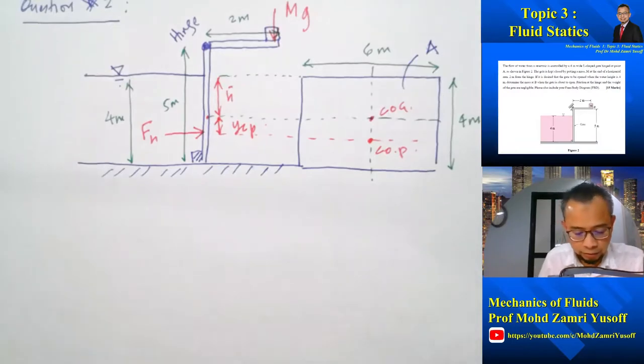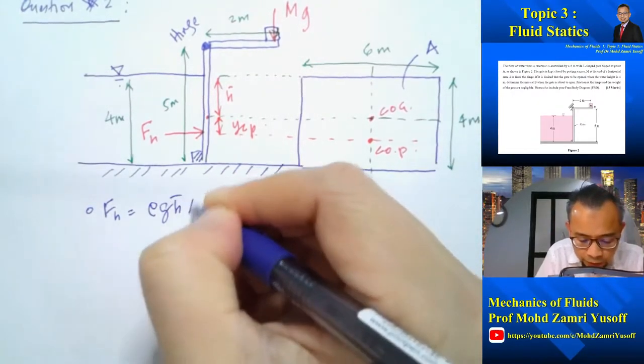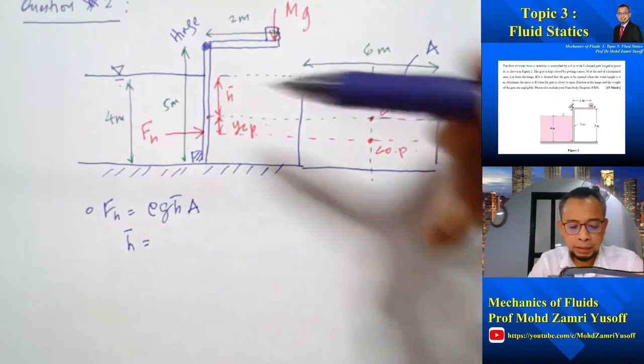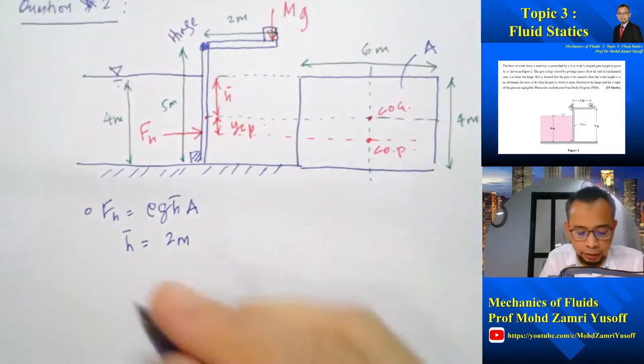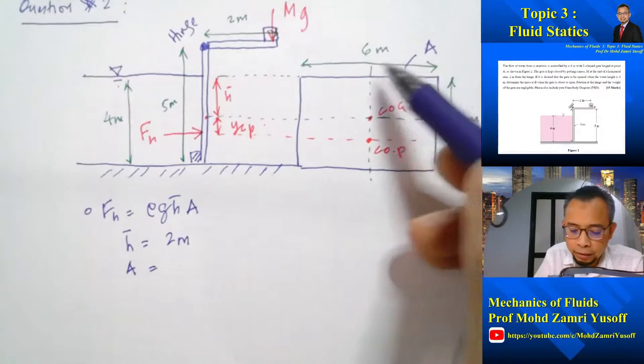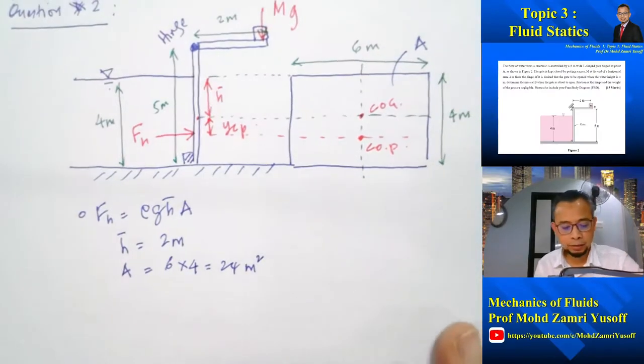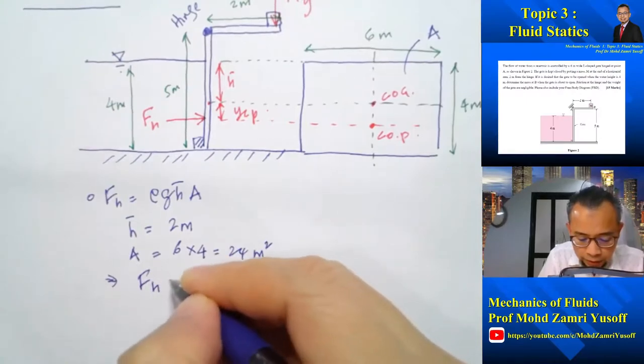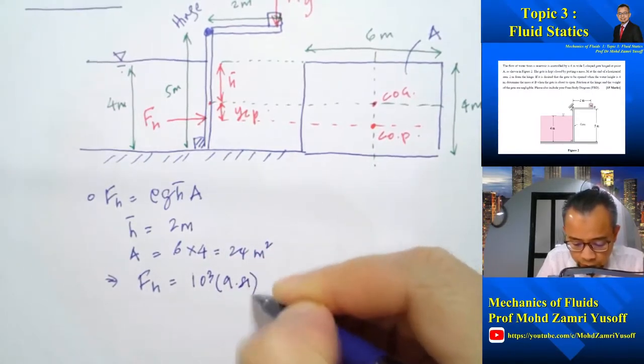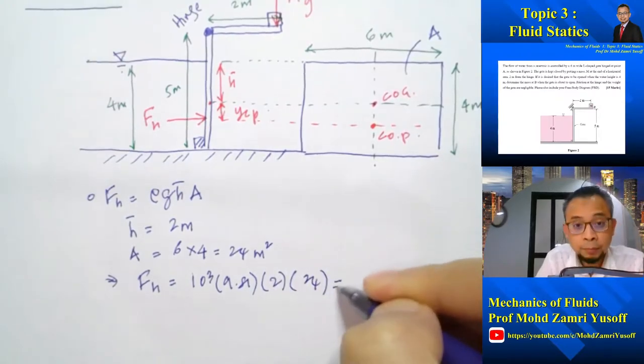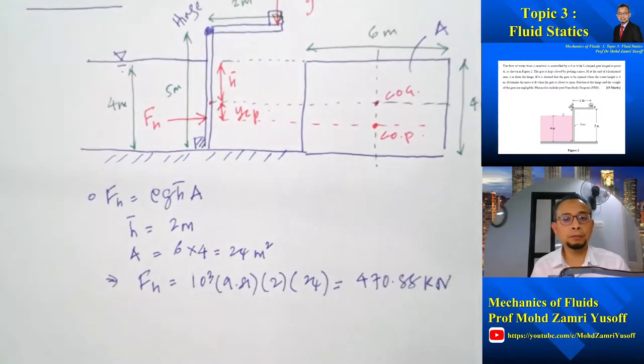The first thing that we can calculate is FH. The hydrostatic force is equal to rho g h bar A. We get h bar, which is the vertical distance from the COG to the water surface. Since this is 4, this is 2. And then the area, the normal area in this case, is 6 by 4, which is 24 meter square. Then we can calculate the hydrostatic force, which is rho is 1000, g is 9.81, h bar is 2, A is 24. So that gives us 470.88 kilonewton.